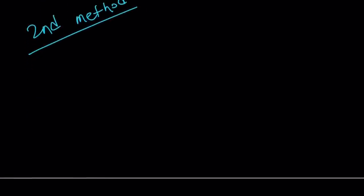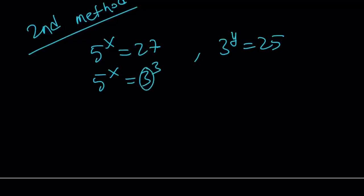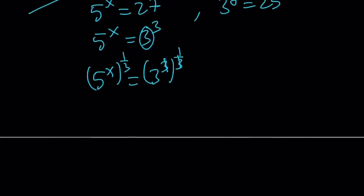So we have, one more time, 5 to the power x equals 27. And 3 to the power y equals 25. So I'm going to go ahead and write the 27 as 3 to the third power. And then from here, I would like to isolate the 3. So let's raise both sides to the power 1 third or cube root, in other words. We can cube root both sides. And the 3 cancels out. And we end up with 5 to the power x over 3 equals 3.